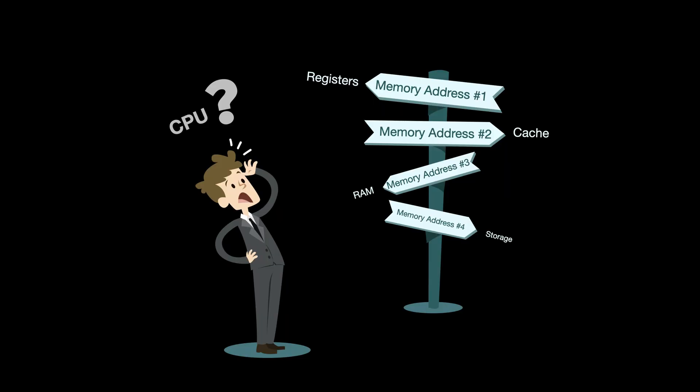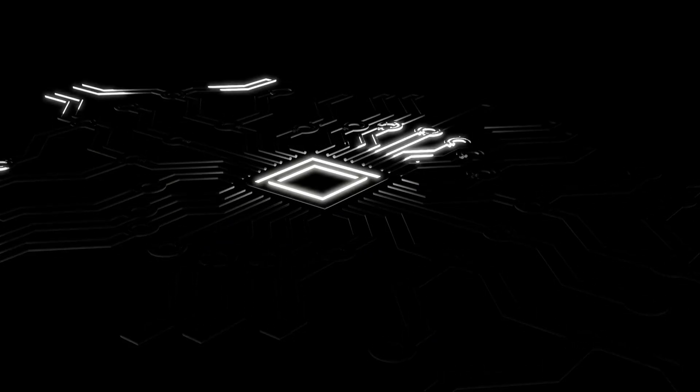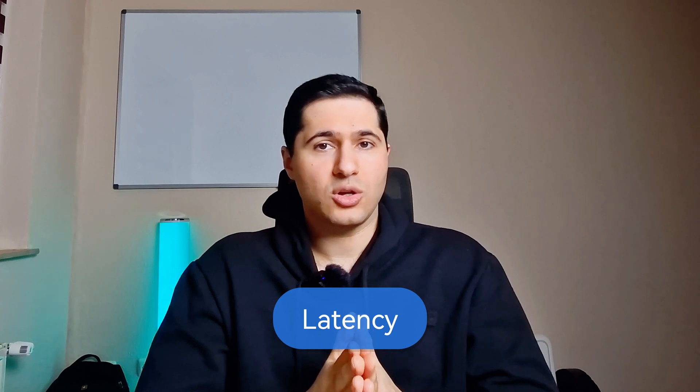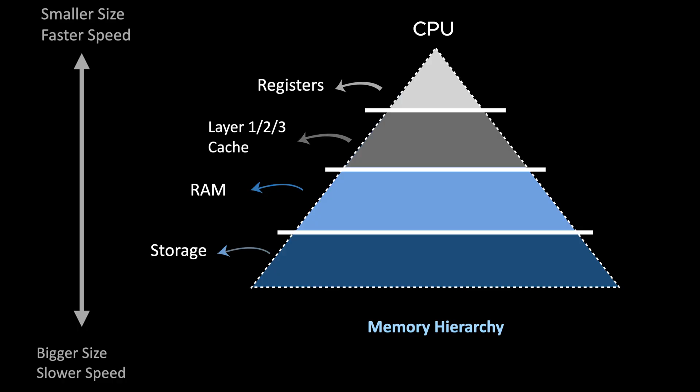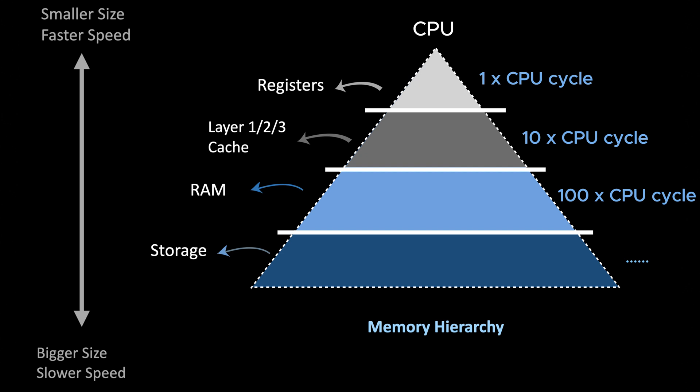Let's talk about how the CPU interacts with memory. The CPU uses memory addresses in order to find the location of data. Imagine an array of numbers — each element is located at a specific memory address, and the CPU fetches each element based on that address. But here's the catch: fetching data from memory is not instantaneous — the delay is called latency. Registers have the lowest latency, fetchable in one CPU cycle. Cache is also fast, but fetching data from RAM compared to cache takes hundreds of CPU cycles, and going all the way to storage takes much more time. Another key factor is bandwidth — the amount of data that can be transferred per second. Together, latency and bandwidth determine how fast data can be accessible to the CPU.